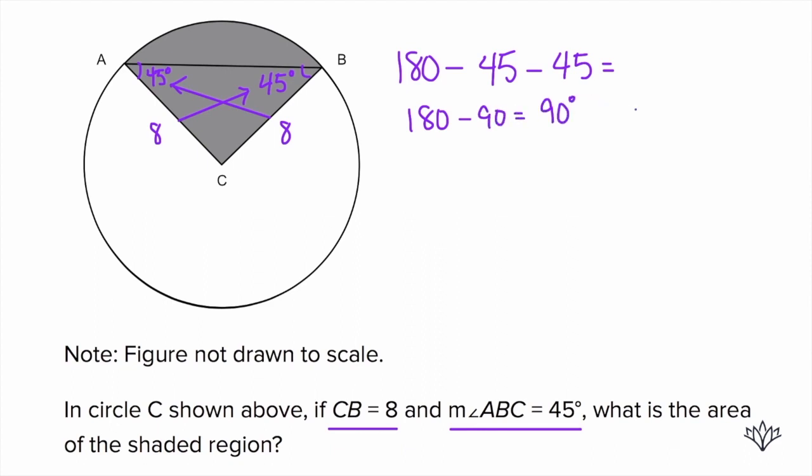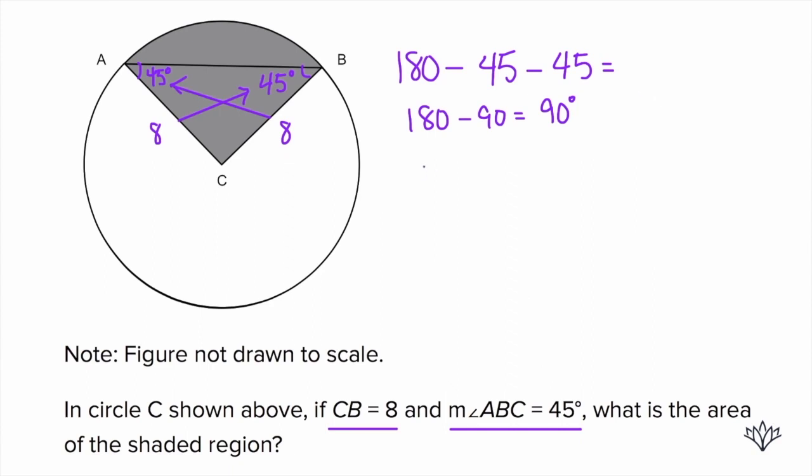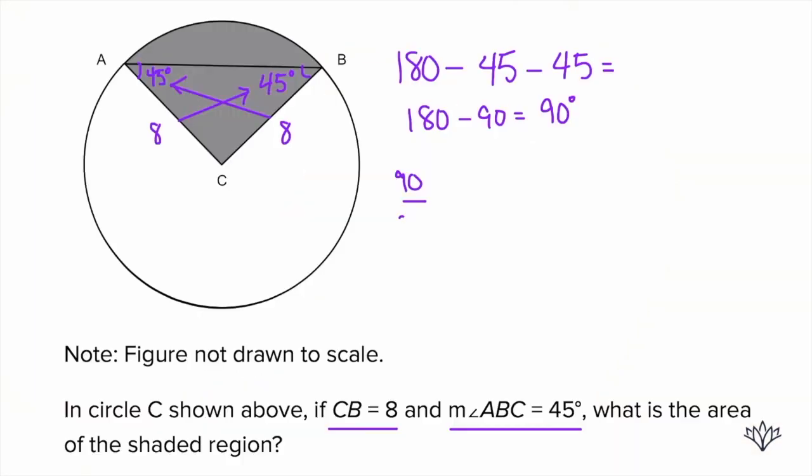Now, what's the question asking for? The area of the shaded region. The area of the shaded region here is literally like a pizza slice. And what portion of the pizza are we dealing with? We're dealing with 90 degrees out of a total of what? For a circle, how many total degrees are there? 360. So, we're dealing with 90 out of 360. We can cancel the zeros. That's 9 over 36. Divide the top and the bottom by 9. And what do we have? 1 over 4. So, we're dealing with 1 fourth of our total circle.